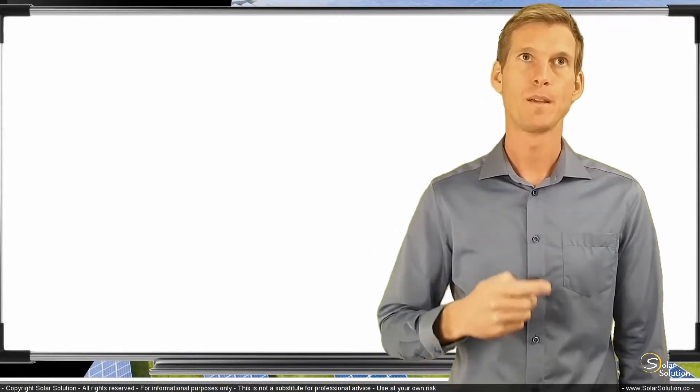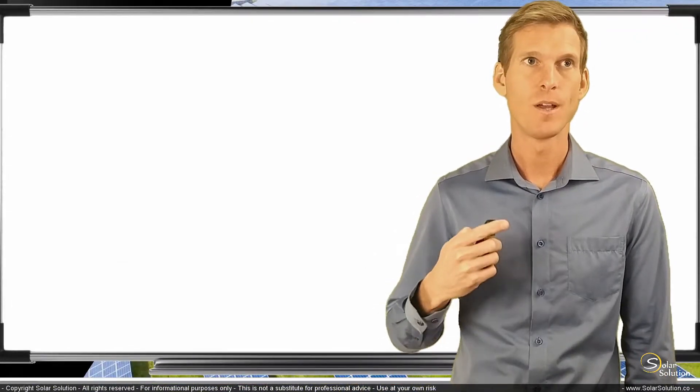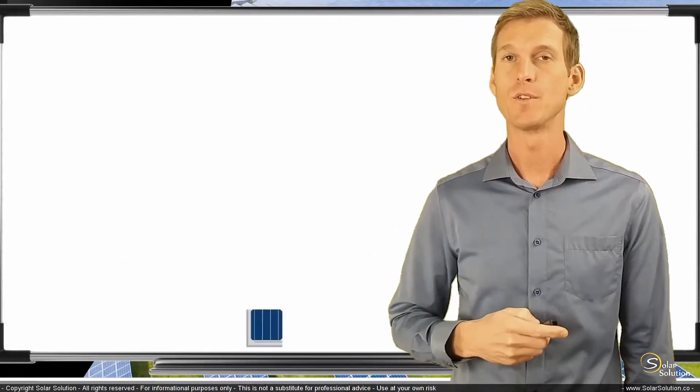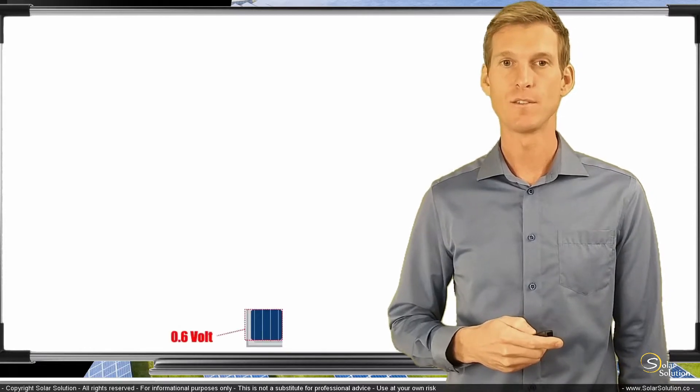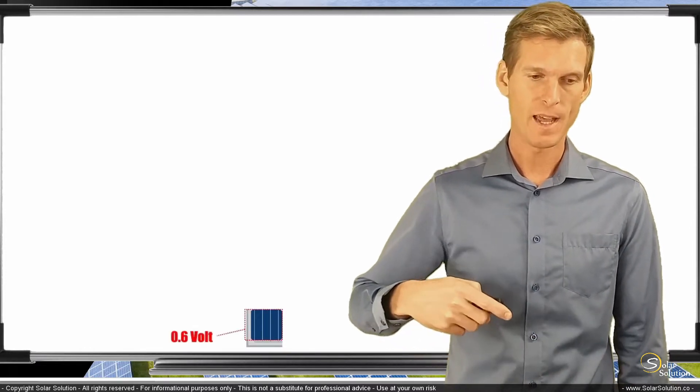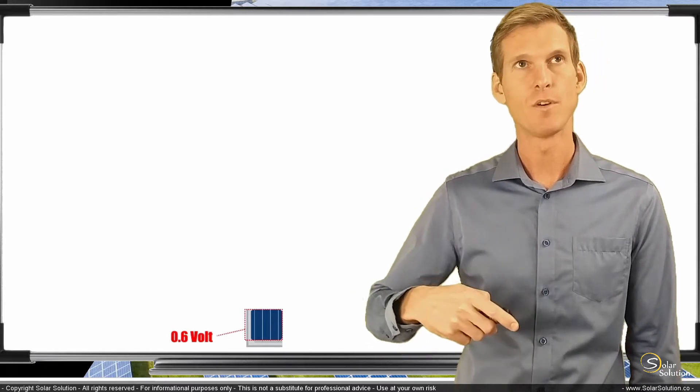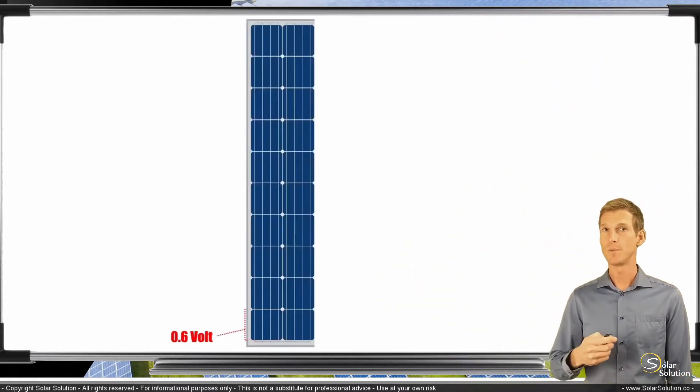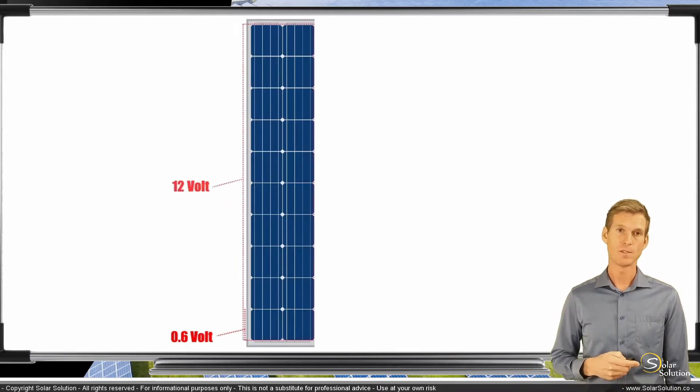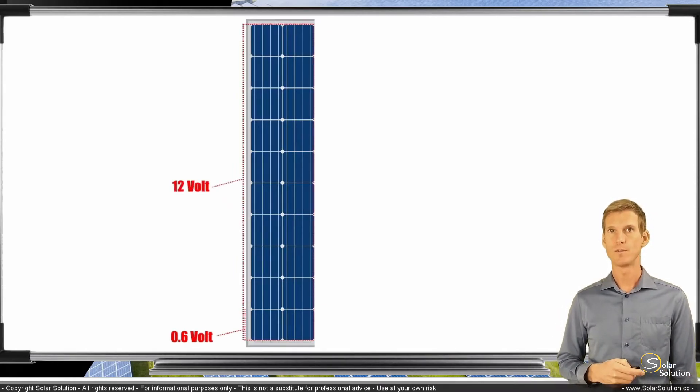So we start with one PV cell. The one PV cell will have an electrical pressure, an open circuit voltage of 0.6 volts. Then we add many more cells. We add an additional 19 cells and we have one group of 20 cells, which will have an open circuit voltage of 20 times 0.6, which is 12 volts.